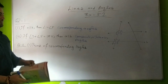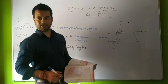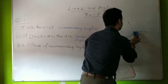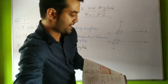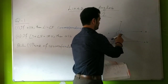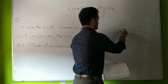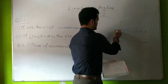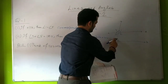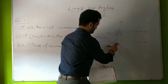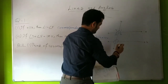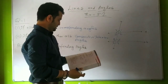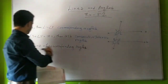Now looking at the second question — again a figure is given, similar to before but with a slight difference: the second transversal is absent. The angles are named as angle 1, angle 2, angle 3, and angle 4 on the first line, and in the same way on the second line the angles are renamed as 5, 6, 7, and 8.